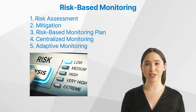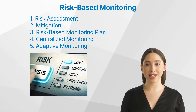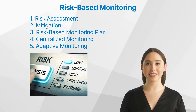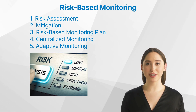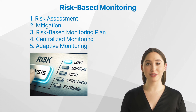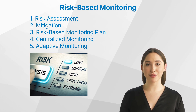Fourth, Centralized Monitoring: in addition to traditional on-site monitoring activities, RBM often involves centralized monitoring, where data is remotely reviewed and analyzed to identify trends, inconsistencies, or potential issues that may require further investigation. Fifth, Adaptive Monitoring: as the trial progresses and new information becomes available, the monitoring plan may be adjusted to address any changes in risks or emerging issues. This flexibility allows for a more efficient use of resources and ensures that monitoring efforts are focused where they are most needed.